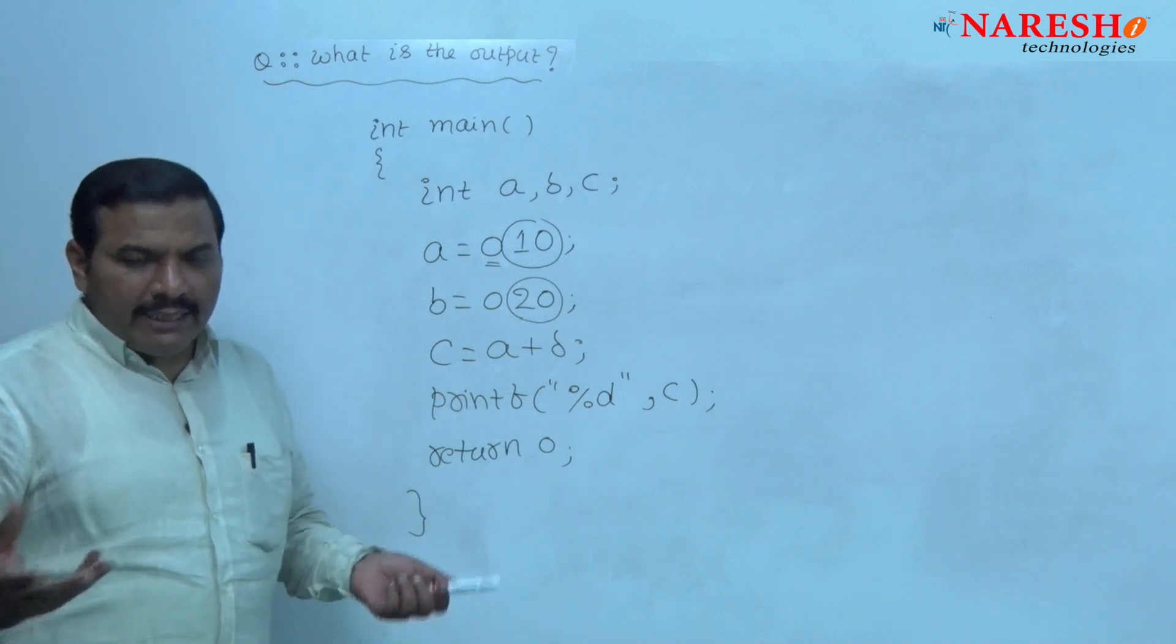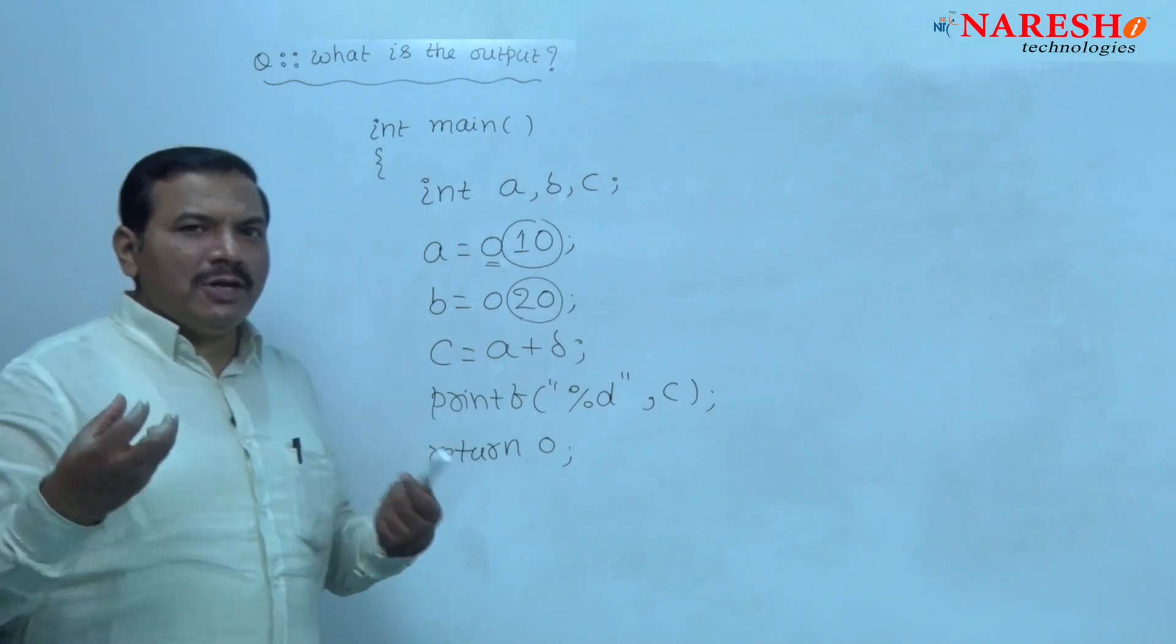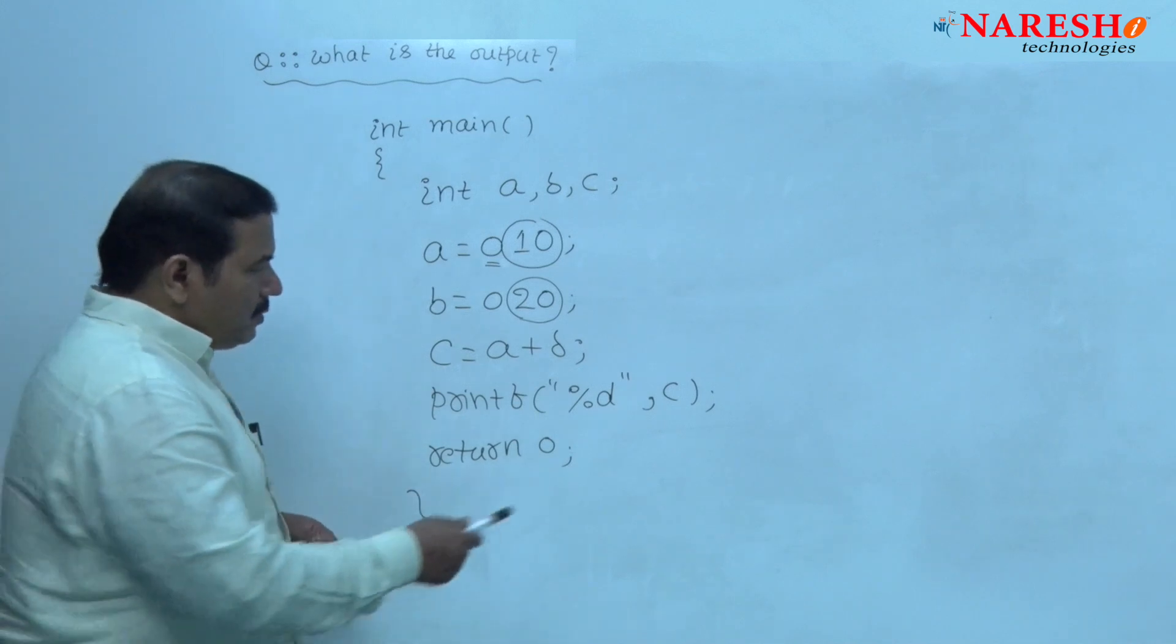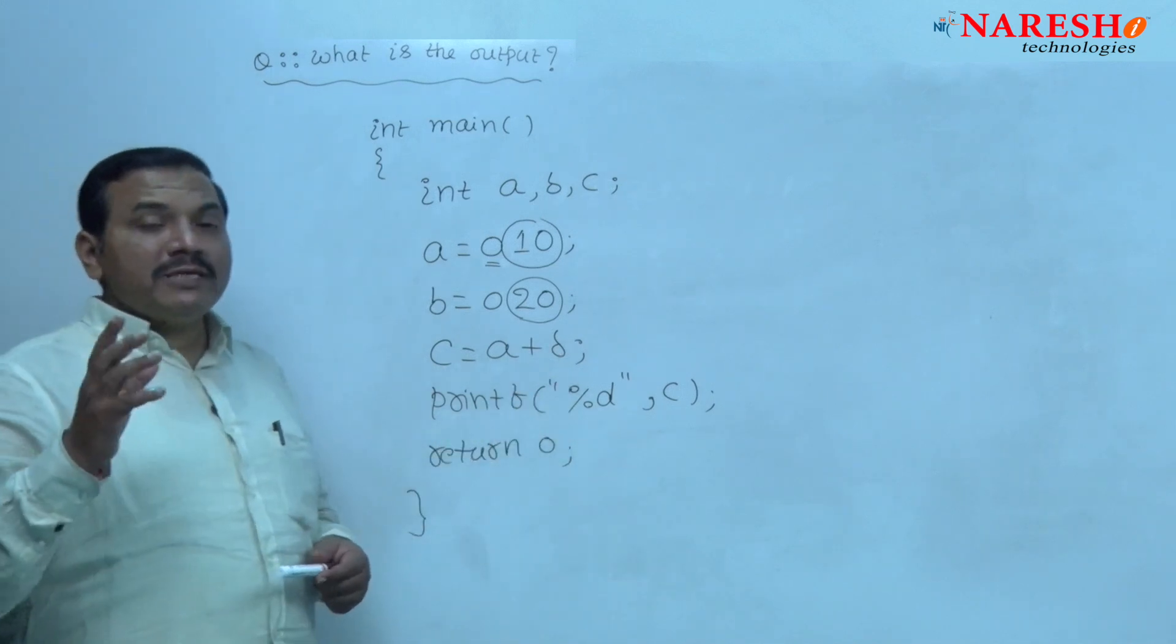If you want to print addition of two octal integers in octal format, use the format specifier percent o.